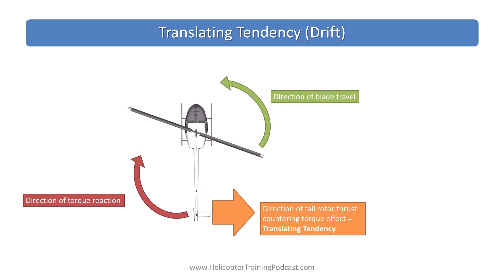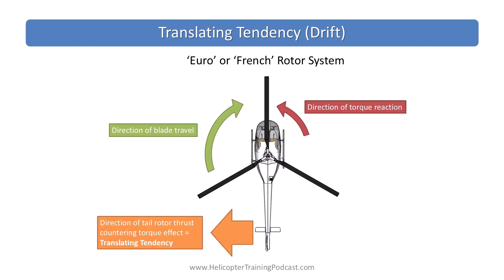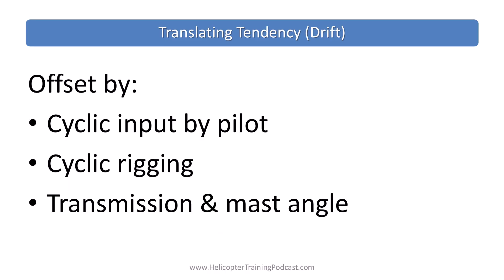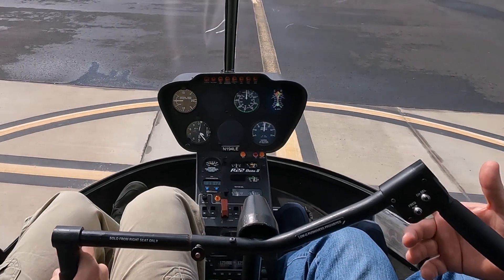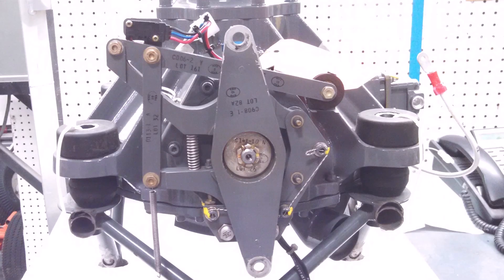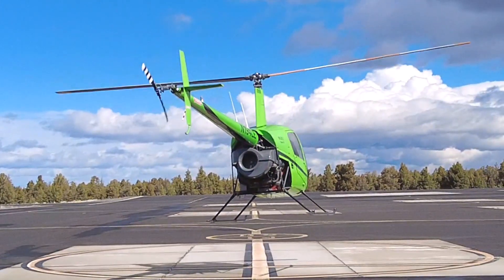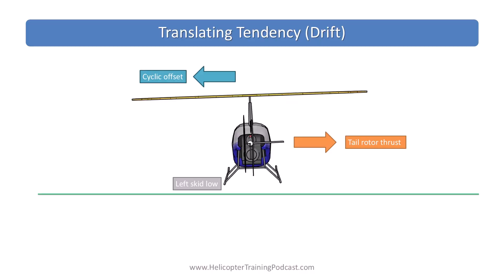While the tail rotor counters torque reaction to maintain heading, it also introduces more aerodynamic complications — something called translating tendency or translating drift. In a helicopter with a counterclockwise rotor system like the R22, the tail rotor thrust acts to the right while hovering, causing the helicopter to drift to the right. The more tail rotor thrust or left pedal you apply, the more that lateral drift to the right occurs. This drift is countered in various ways, from pilot cyclic input to cyclic rigging, where the center position already has some input built into the rotor system, to an offset of the main rotor transmission mast.